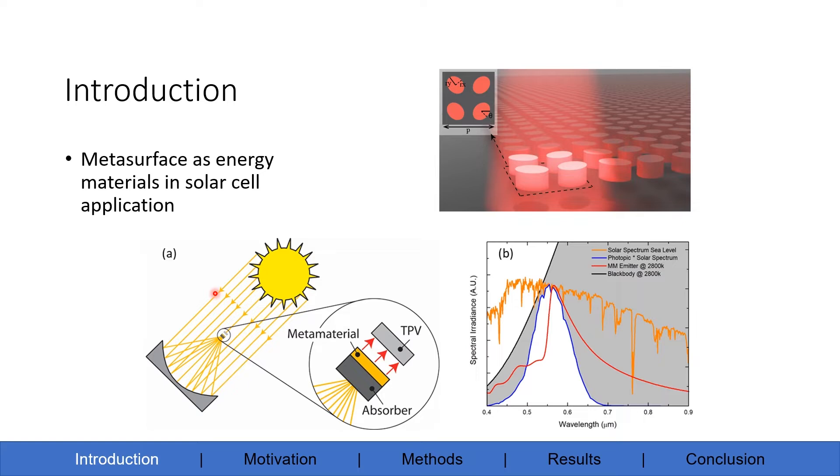In figure A, the light from the sun is focused onto an absorber, and the metasurface takes the blackbody radiation from the absorber and tries to match its emission spectrum as close as possible to the absorption spectrum of the TPV cell, which will maximize the absorption efficiency of the solar cell.